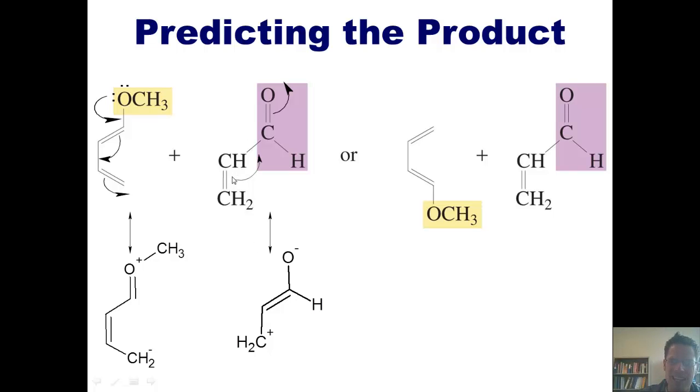Contrasting the previous example, I can't show a real significant resonance contributor in which I end up getting a negative charge on this carbon down here. Thus, having this carbon-carbon double bond conjugated to this carbon-oxygen double bond produces a partial positive charge on this carbon at this position. I want you to look at these two molecules.